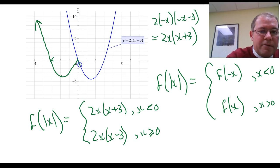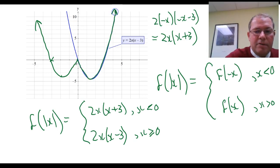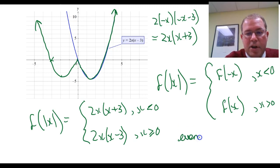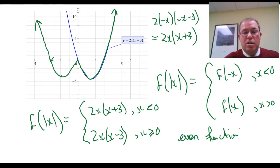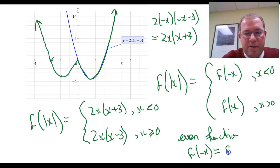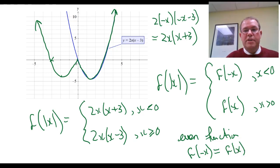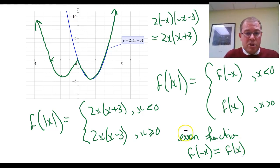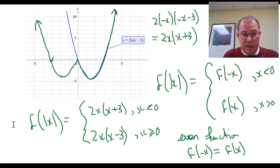The final graph is the one shown in green. Of course, it is an even function, as it is symmetrical across the y-axis, and f of minus x equals f of x — which is the definition of an even function. Thank you very much for watching. I hope you enjoyed this short video, and if you did, please watch some of my other videos.